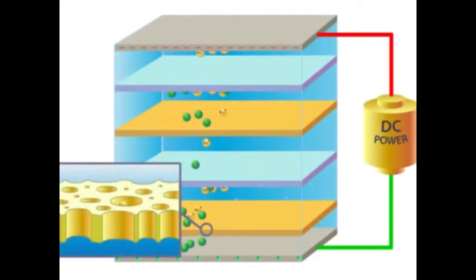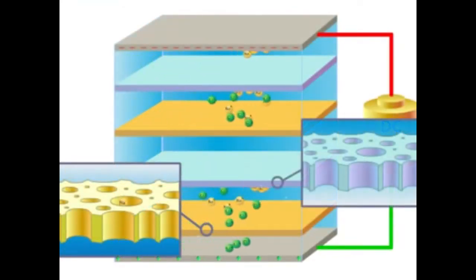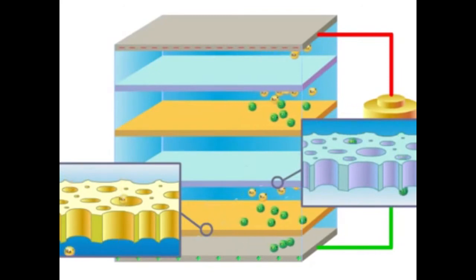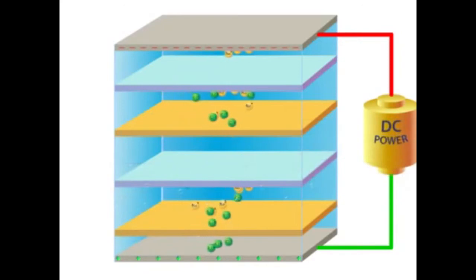Electrodialysis is an advanced membrane technology that utilizes this ion movement to desalinate water. With electrodialysis, the ions move through special membranes and create two separate streams, a desalinated stream and a concentrated salt stream.